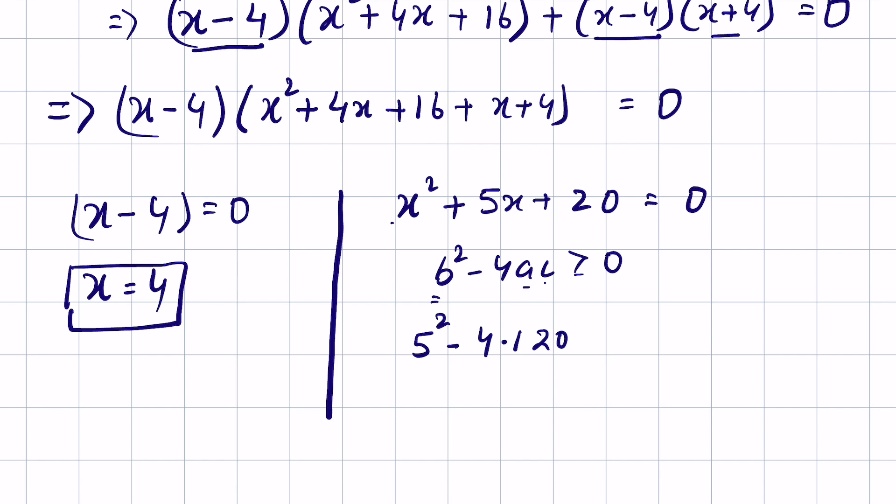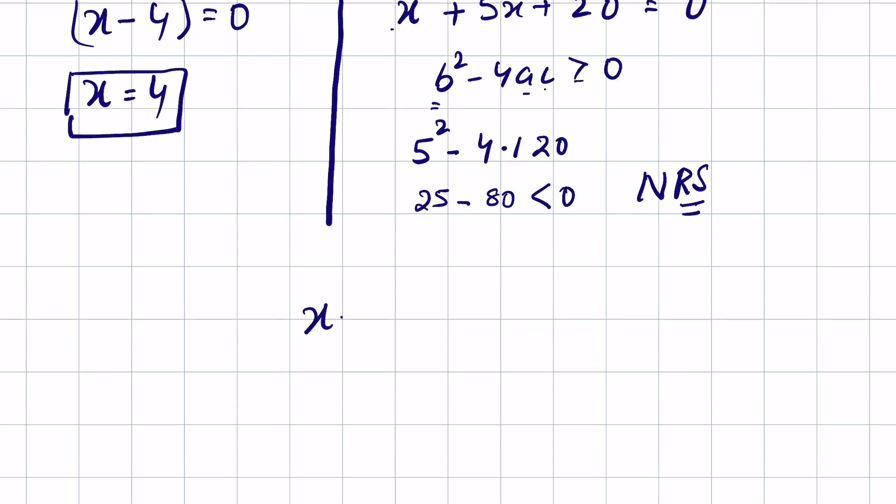25 - 80 is less than 0. It's negative, so no real solution from this factor. Therefore, x = 4 is our answer.